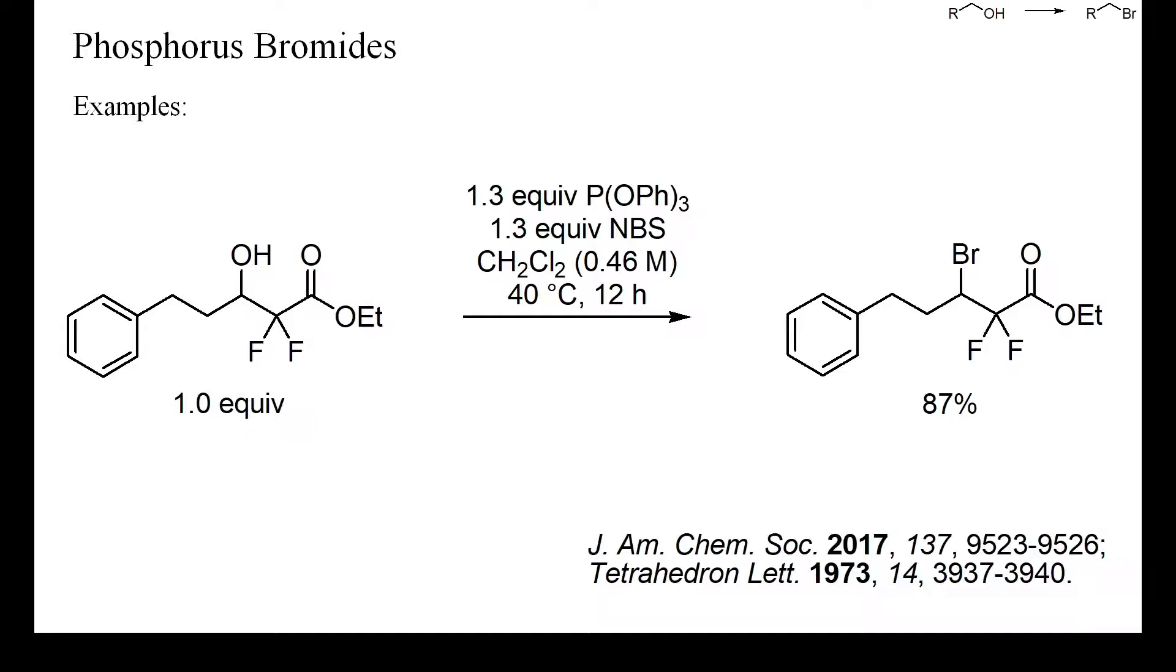Beta-fluorinated alcohols, as the starting material of this example, do not undergo SN2 reactions readily, and sulfonates of such alcohols or the corresponding bromides or iodides are exceptionally unreactive electrophiles.